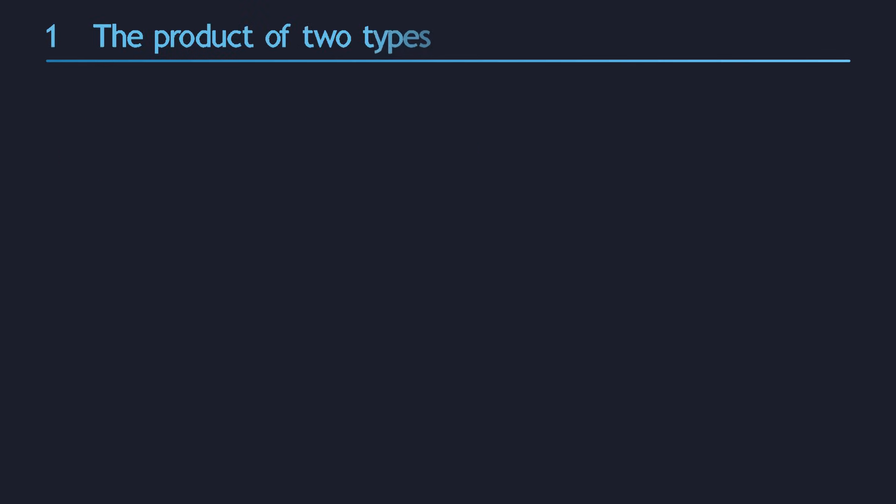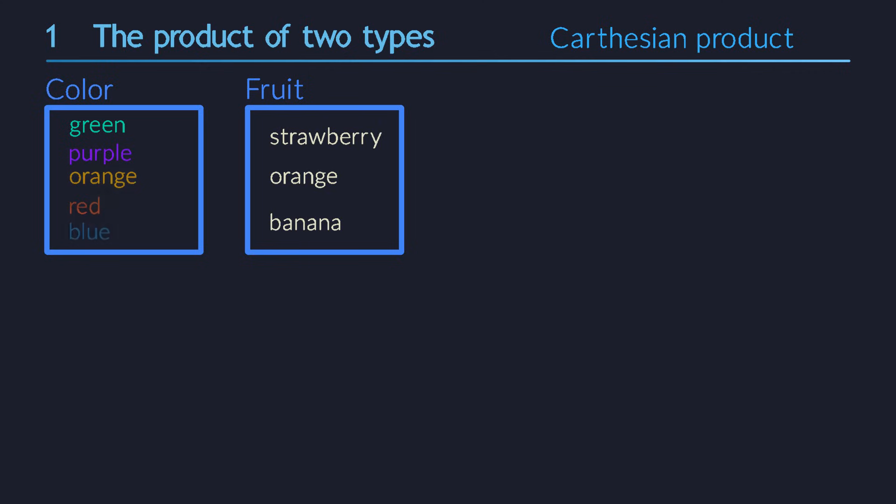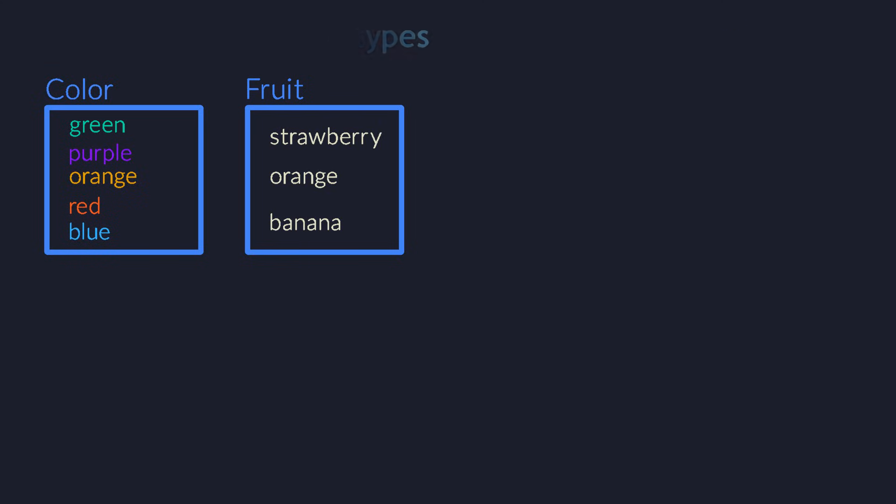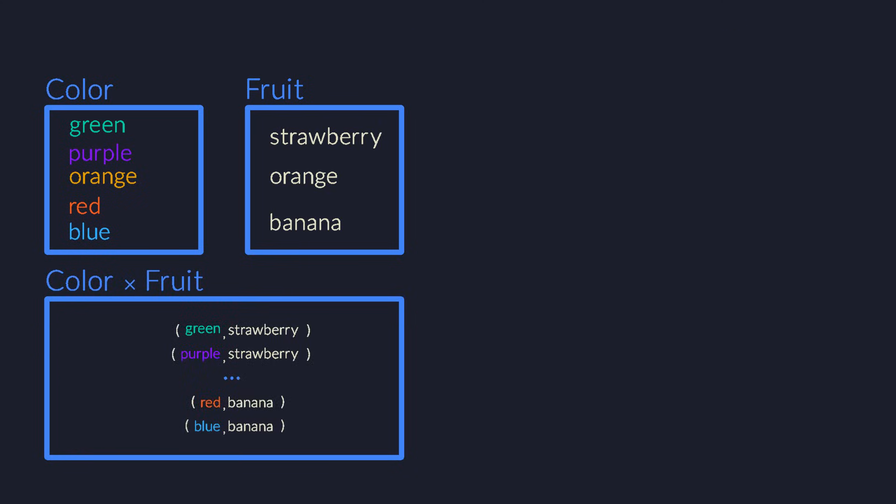The first thing we will do is take the product of two types. You may already know this as the Cartesian product of two sets. It contains all of the possible pairs of values from the original sets. So the product of colors and fruits contains everything from green strawberries to purple bananas.